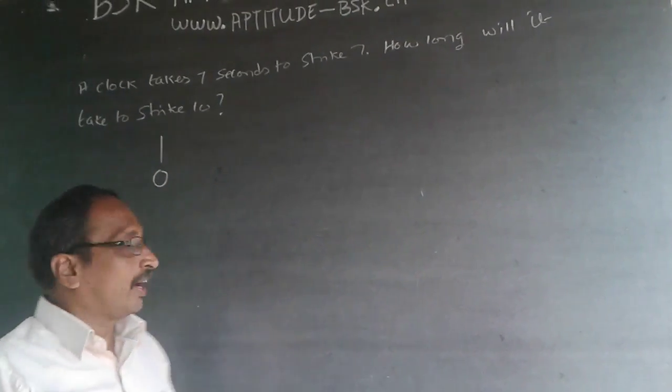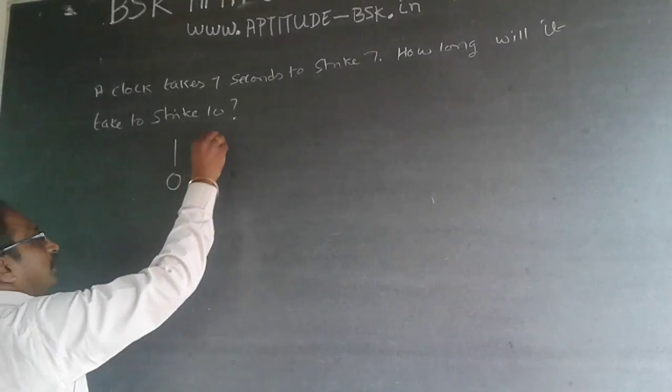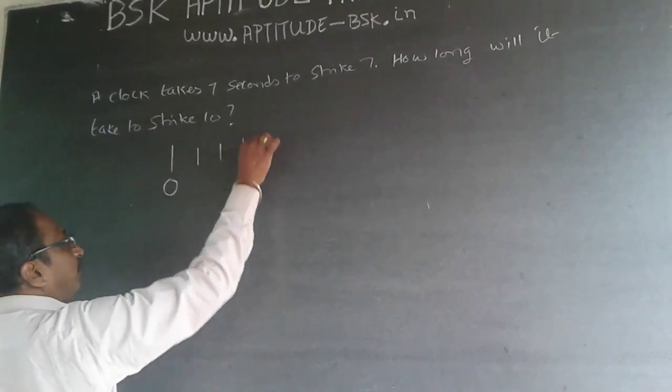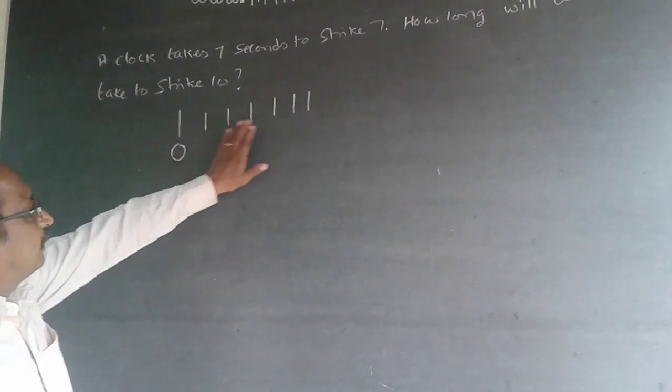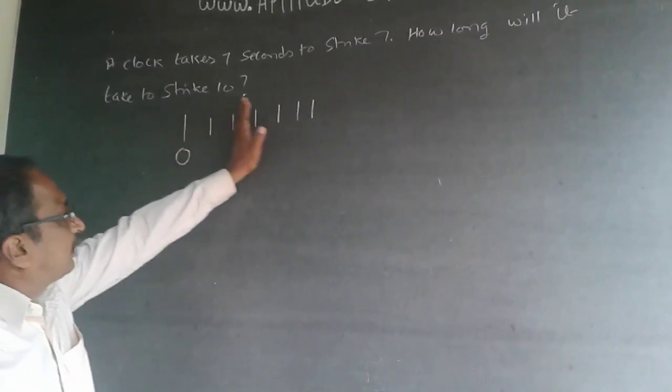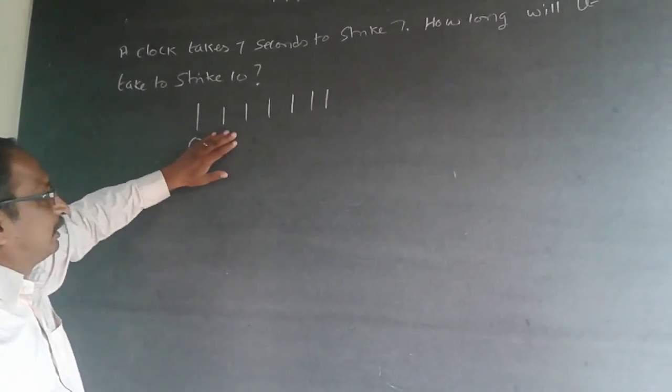So what happens is, it will strike for the second time, third time, fourth time, fifth time, sixth time, and seventh time. So for striking this 7 times means, for additional 6, it is taking 7 seconds.